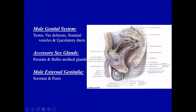Here you can see the testes, then the vas deferens — the duct conducted from the epididymis — and the seminal vesicles as well as the ejaculatory duct. These form the main primary organs for the male reproductive system. Apart from that, there are accessory sex glands which secrete secretions added into the ejaculatory duct. These accessory glands are the prostate as well as the bulbourethral glands. The prostate is just below the bladder, with the urethra passing through it.